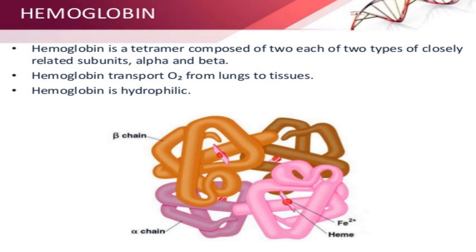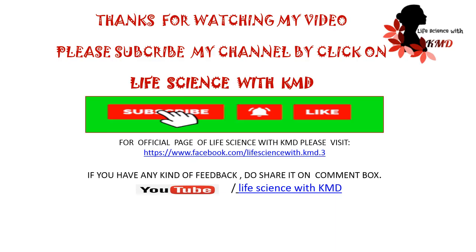An example of quaternary structure is hemoglobin. Hemoglobin is a tetramer composed of two each of two types of closely related subunits, that is alpha and beta subunits. Hemoglobin transports oxygen from the lungs to the tissues.